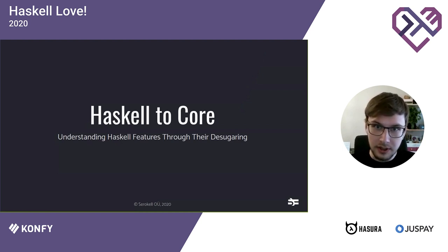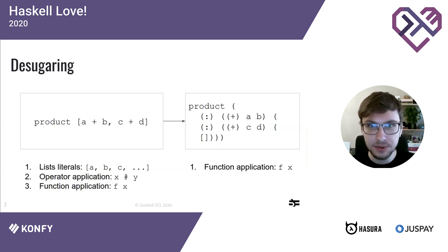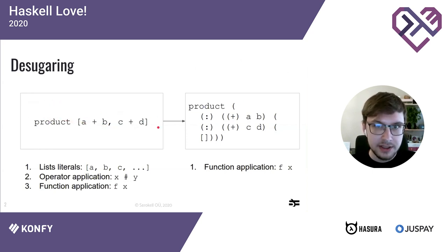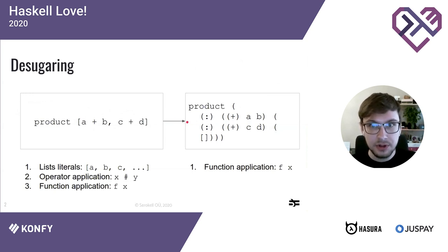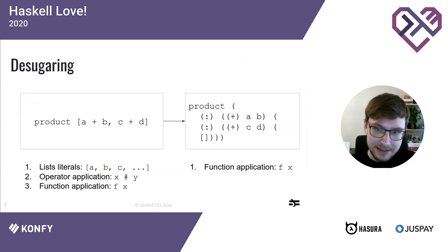But first — what is Core and what is desugaring? The short answer is that desugaring translates a program that uses many different language constructs into a program that uses only a few. For example, a program using list literals, operator application, and function application can be translated into one that uses function application only. The resulting program is harder to read, but the building blocks used to write it are simpler.